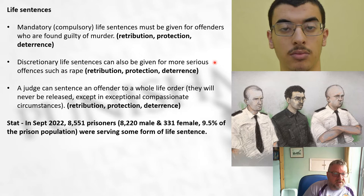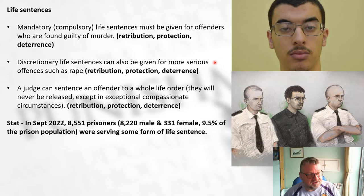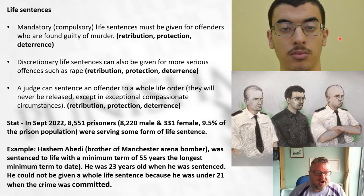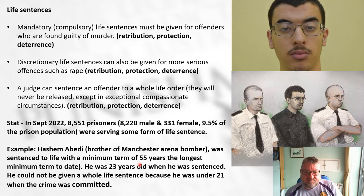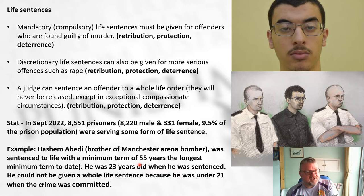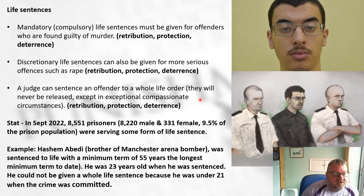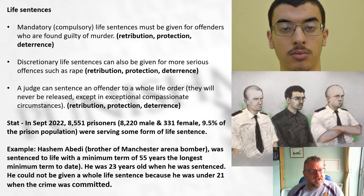9.5% of the prison population are serving some form of life sentence. As a case study, Hashem Abedi - the brother of the Manchester Arena bomber - was sentenced to life with a minimum term of 55 years, the longest minimum term ever set by a judge in our courts. He was 23 when sentenced and couldn't receive a whole life term because he was under 21 when the crime was committed. He won't even be considered for parole until he's 78.